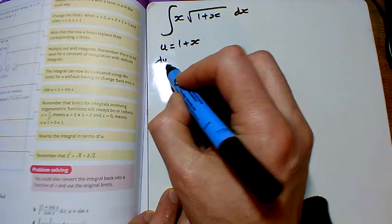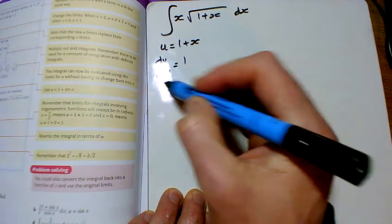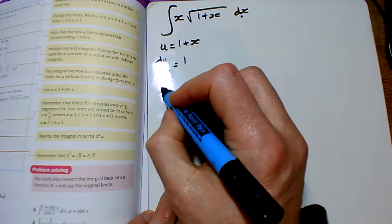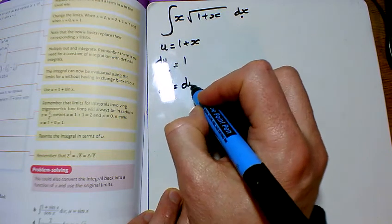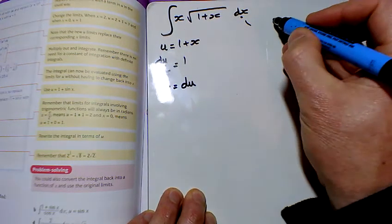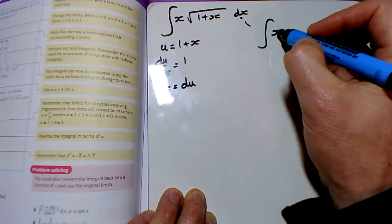So here we've just got dx equals du, and this integral is now x times by this thing here, which is what I'm calling u, so u to the power of a half. And instead of writing dx, I'm going to write whatever this is, which is just du.